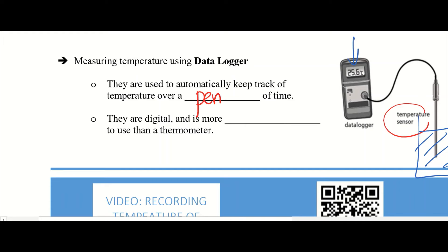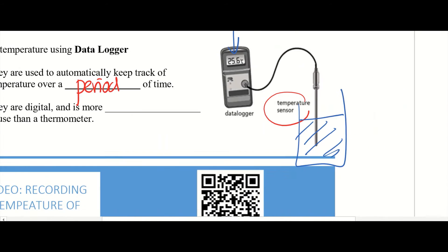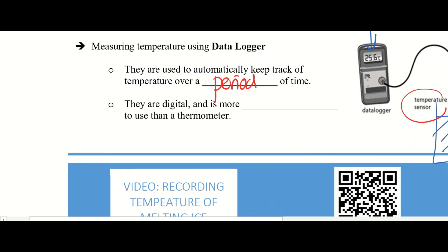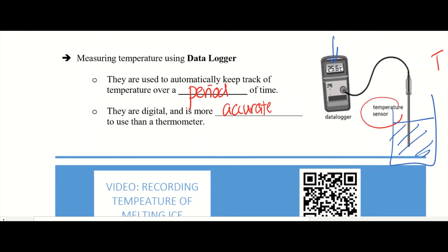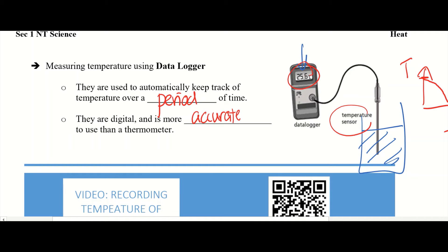Over a period of time — so let's say the temperature of a liquid is cooling; it was very hot and is now cooling. I can place the sensor in, turn on the data logger, and it's able to track the different temperatures as time passes. We can then connect it to the computer and extract the data to tell us how the temperature of the substance changes over time. They're digital and more accurate — they give you a very precise number and can tell you how temperature changes even over time.